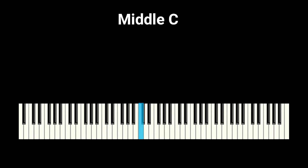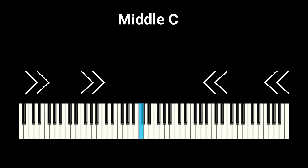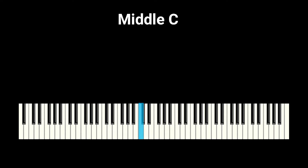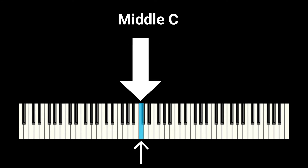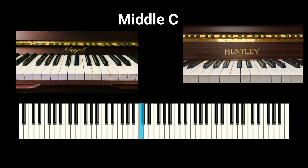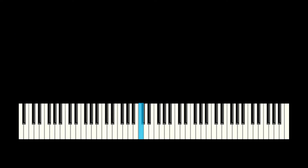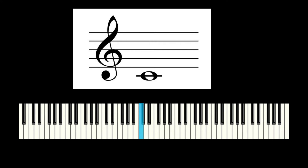We're now going to identify the note we call middle C. Working from the outside edges to the middle, middle C is the white note to the left of the two black notes highlighted here in blue. It's often in front of the name of the company that made your piano, which is just above your keyboard. Middle C is very important as it tells us whereabouts on the keyboard other notes are placed.